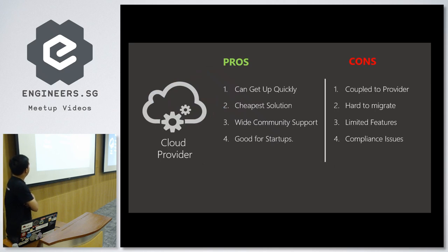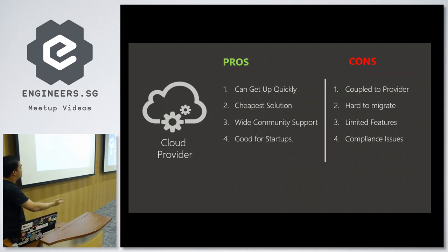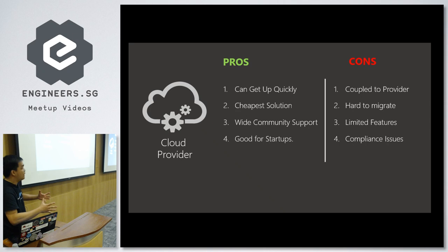The pros of cloud provider-based API Gateways: you can get up quickly, it's the cheapest solution since you don't need developers to build the gateway infrastructure, and you have wide community support. It's especially good for startups. The cons: you're going to be married to Azure or AWS. What if you're a startup that wants a temporary solution and later wants to switch to on-prem infrastructure? You can use the cloud gateway for three or four months and then switch.